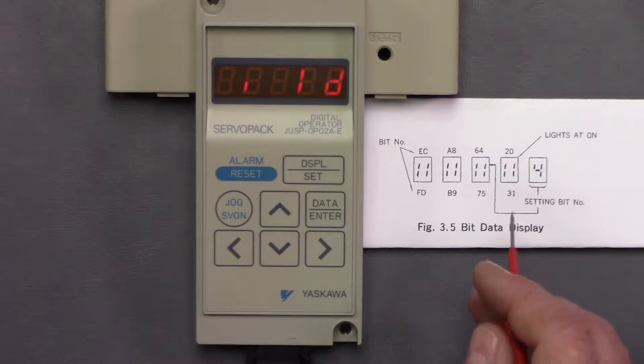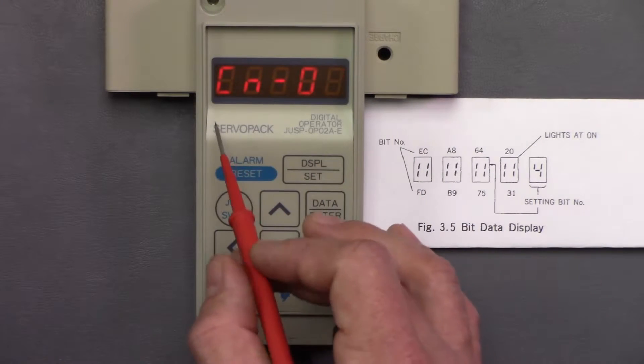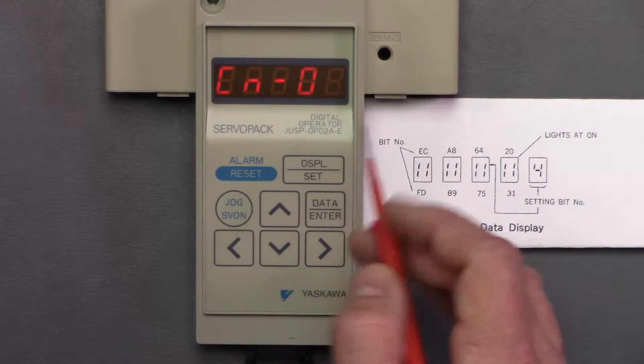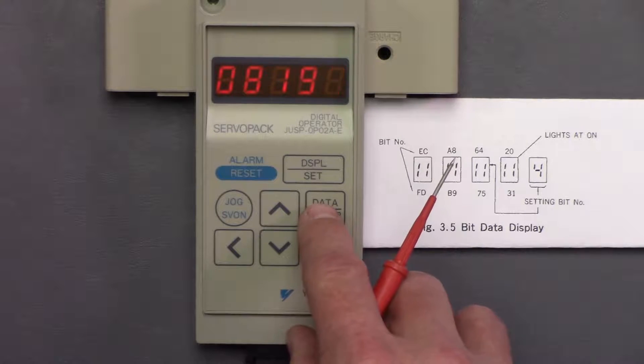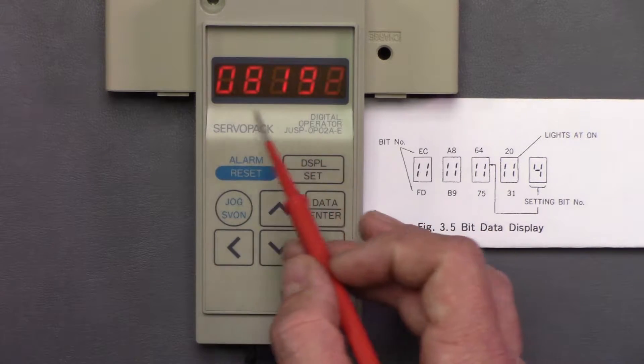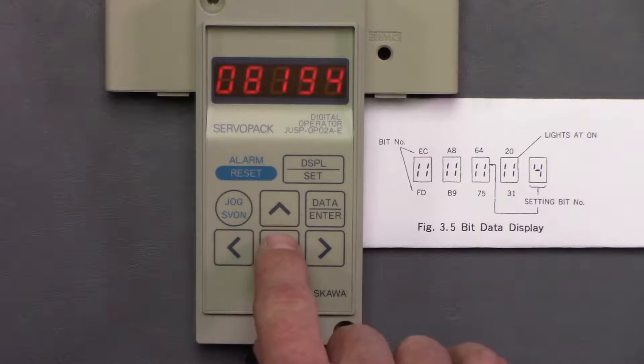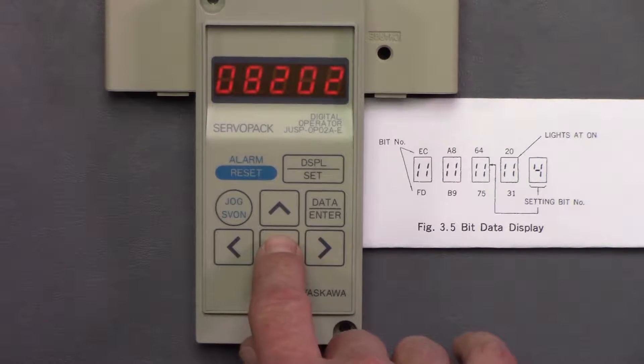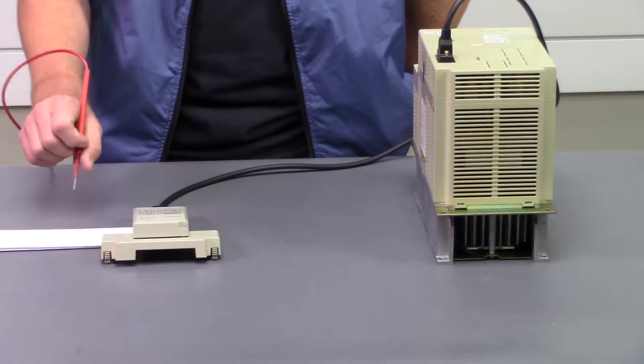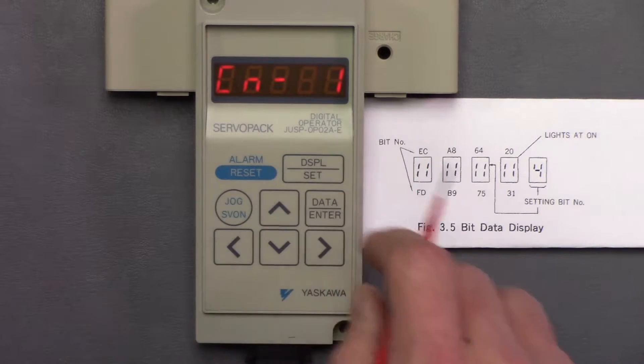To get back into the main status, you'll hit data enter, and it's going to bring you back to the CN. So the next thing we're going to do is go into CN11, hit data enter. This is another parameter that can be edited, and this is a little bit simpler because all you do is use the arrows to toggle the values up and down. So I'm going to leave this at 8192. That's where it needs to be. If we were to make a change, we hit data enter, it'll save, hit data enter, brings us back to the CN function.